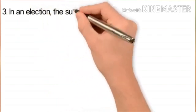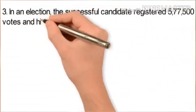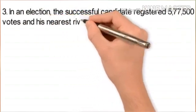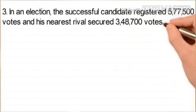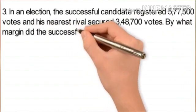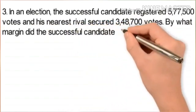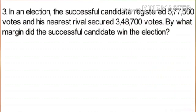In an election, the successful candidate registered 5,77,500 votes and his nearest rival secured 3,48,700 votes. By what margin did the successful candidate win the election? The margin is simply the difference between both candidates. The first candidate scored more votes, so it will be a subtraction problem.